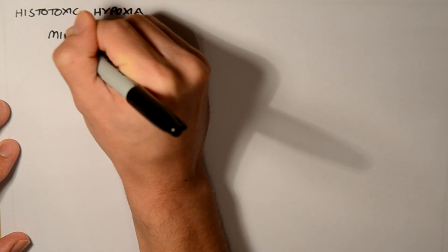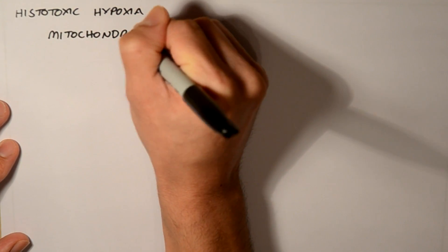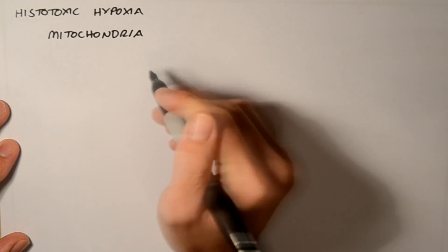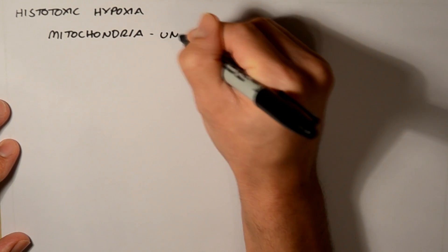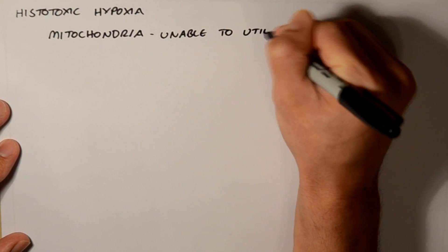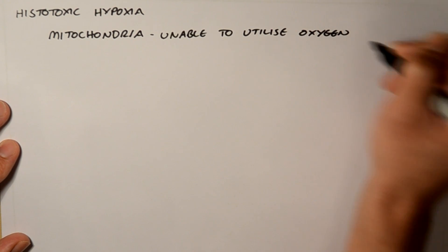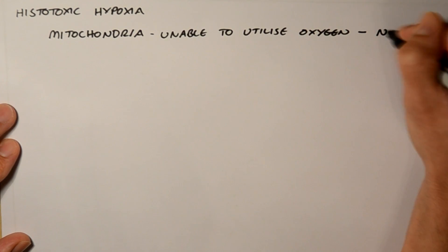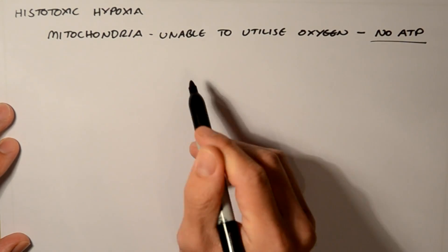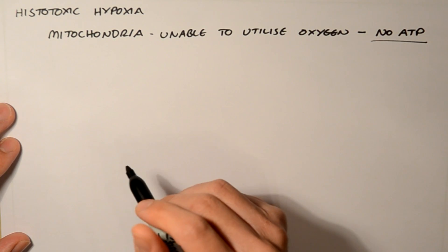This is where the mitochondria are unable to utilise the oxygen. Why is this important? No ATP. If they can't utilise the oxygen, they can't make ATP. When does this actually happen?